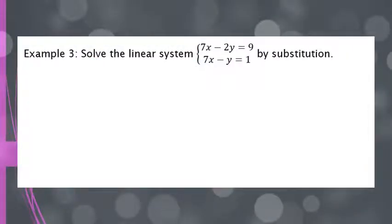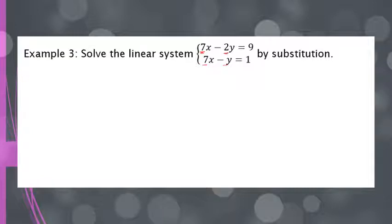To solve this by substitution, we need to solve one of our equations for a variable, looking for the easiest option. The best case scenario is having a coefficient of positive 1 in front of x or y. Here I have a 7, a negative 2, a 7, and a negative 1. I don't have a positive 1, but the negative 1 coefficient is still the best option since it's still a coefficient of 1. So I'm going to choose the bottom equation and solve it for y.